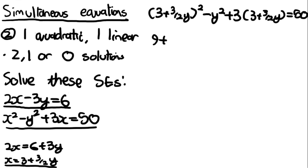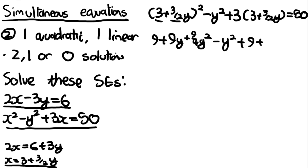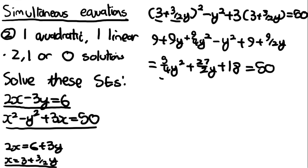Expanding the bracket: (3 + (3/2)y)² = 9 + 9y + (9/4)y². A quick way to get the middle term is to multiply the two different parts and double it. So expanding fully gives 9 + 9y + (9/4)y² − y² + 9 + (9/2)y = 50. Simplifying: (5/4)y² + (27/2)y + 18 = 50.